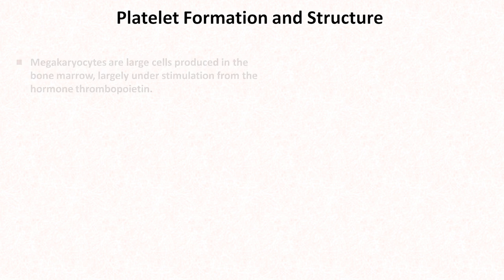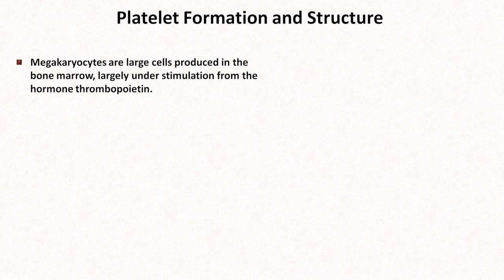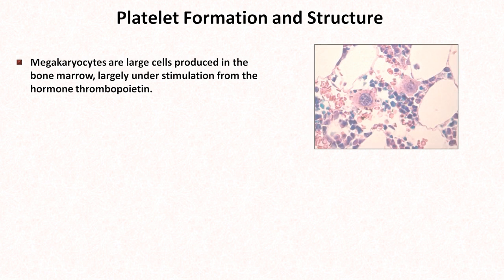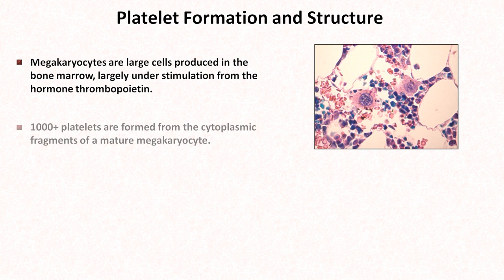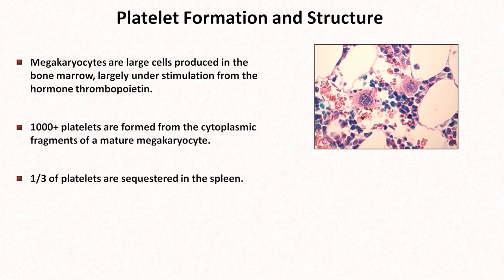Platelets come from megakaryocytes — large cells produced in the bone marrow, largely under stimulation from the hormone thrombopoietin. Here's a path slide from a bone marrow biopsy in which two megakaryocytes are seen near the middle. Over 1,000 platelets are formed from the cytoplasmic fragments of a mature megakaryocyte. One third of the platelets in the body are sequestered in the spleen, and this splenic platelet pool freely exchanges with the platelets in circulation. Normal platelet lifespan is about 10 days.